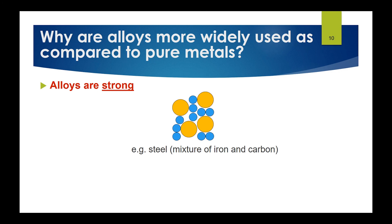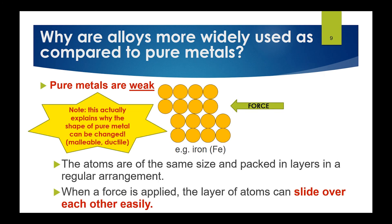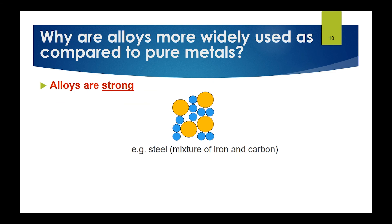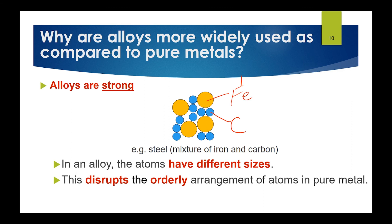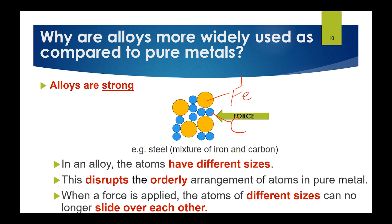In an alloy such as steel — a mixture of iron and carbon — the carbon atoms are much smaller than the iron atoms. This means the atoms are of different sizes, which disrupts the orderly arrangement of atoms. When a force is applied, the atoms of different sizes can no longer slide over one another easily. The larger atoms block the sliding movement, preventing the layers from shifting, and as a result the alloy is much stronger overall.